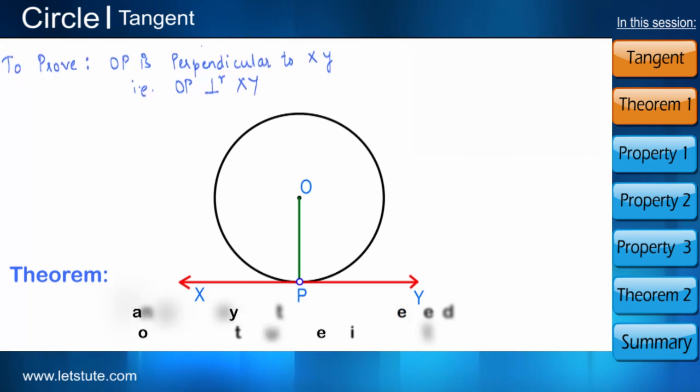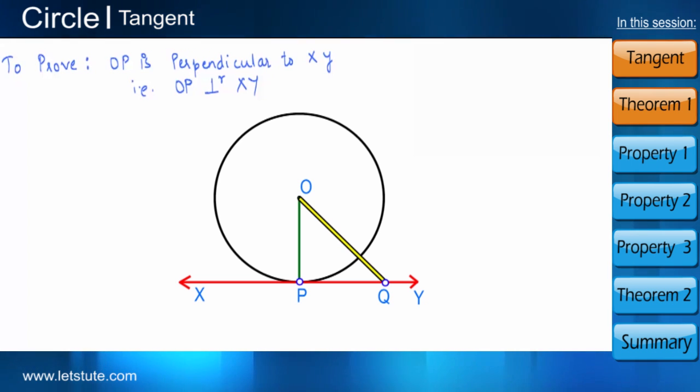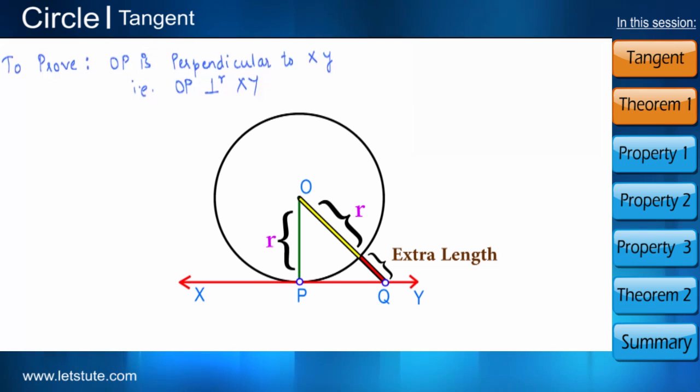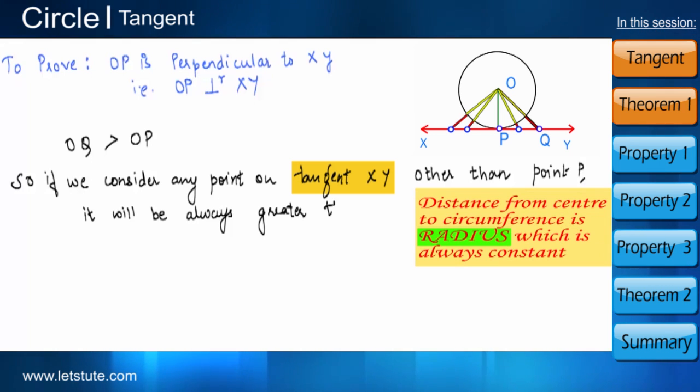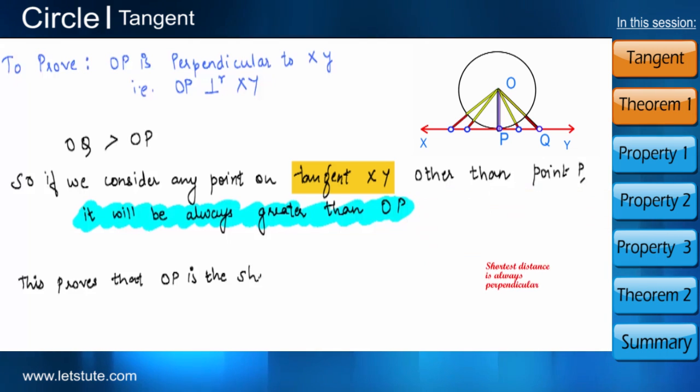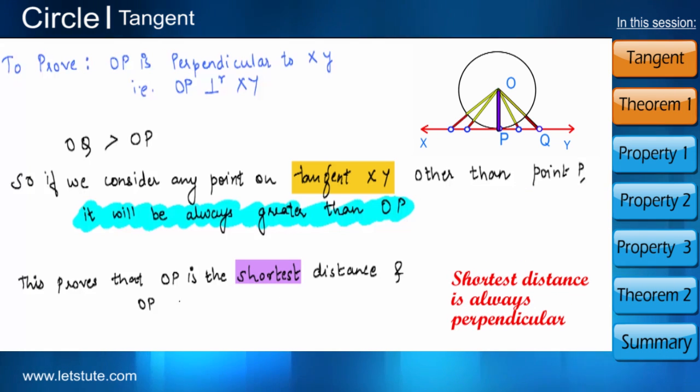Now if we take a point Q outside the circle and on the tangent, OQ is not a radius because it extends outside the circle as you can see. Hence, if we consider any point on tangent XY other than point P, it will be always greater than OP. This proves that OP is the shortest distance and OP is perpendicular to the tangent XY.